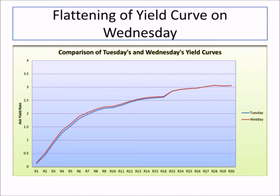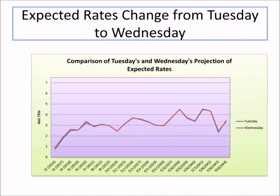The yield curve flattened on Wednesday. Short-term rates rose more than the long-term rates. This implies prices of short-term Treasuries fell while at the tail end rose, as the demand for long-term Treasuries increased. The benchmark 10-year note rate also increased. Unsurprisingly, the expected rates increased more for the short-term than at the long-term. However, the volatility still exists, which implies the market and investors are not having consistent expectations regarding the future rates.